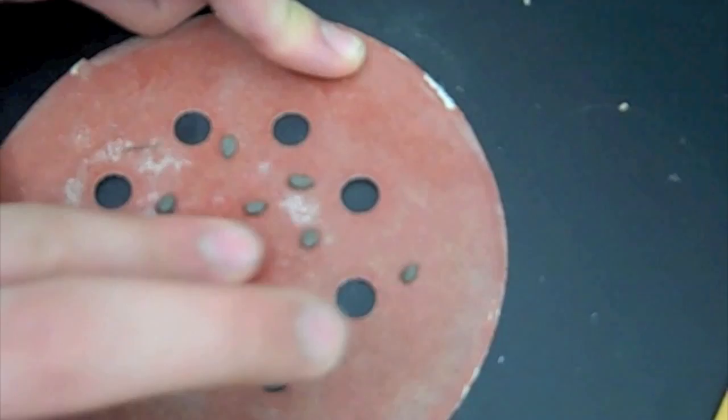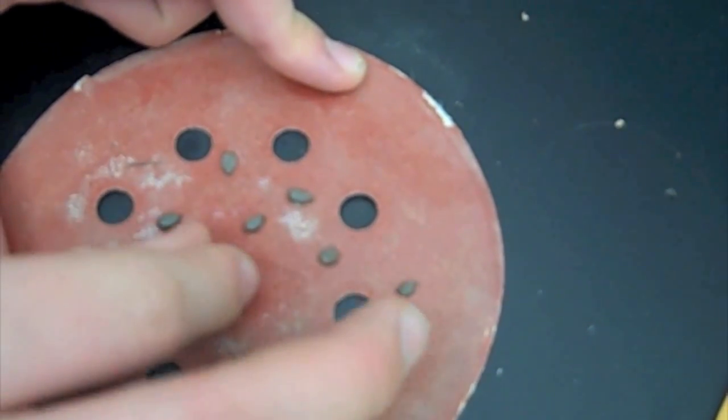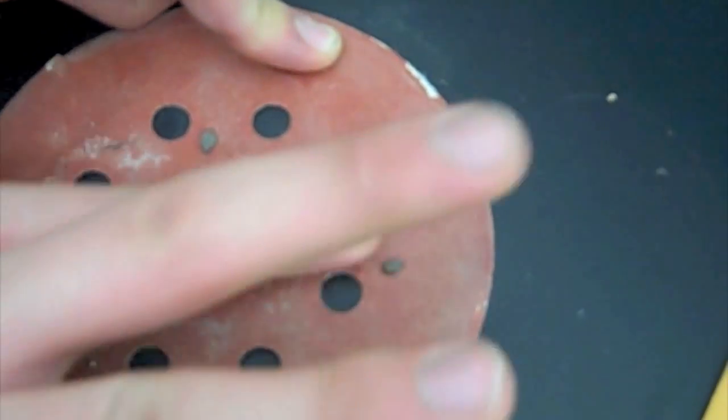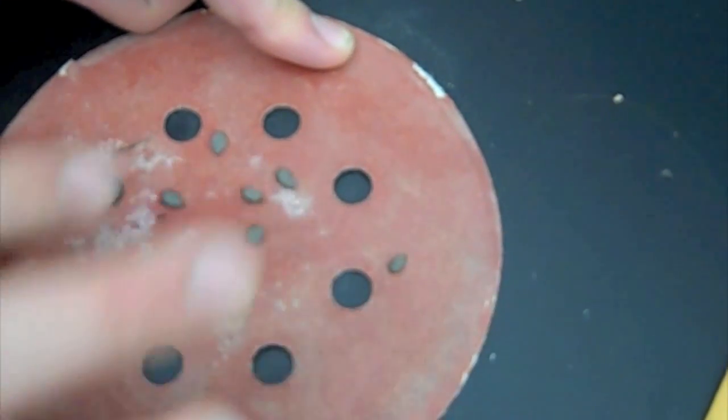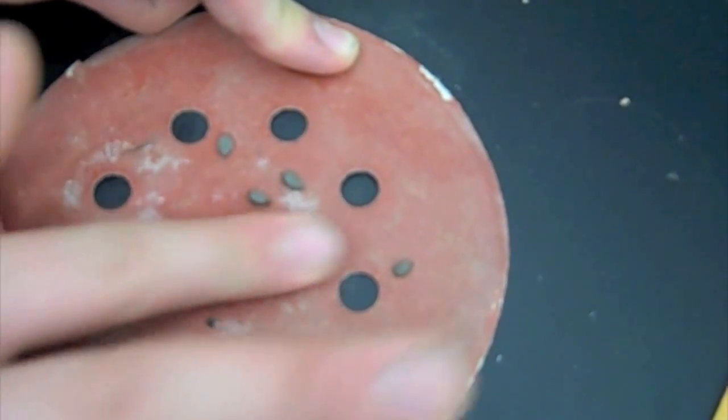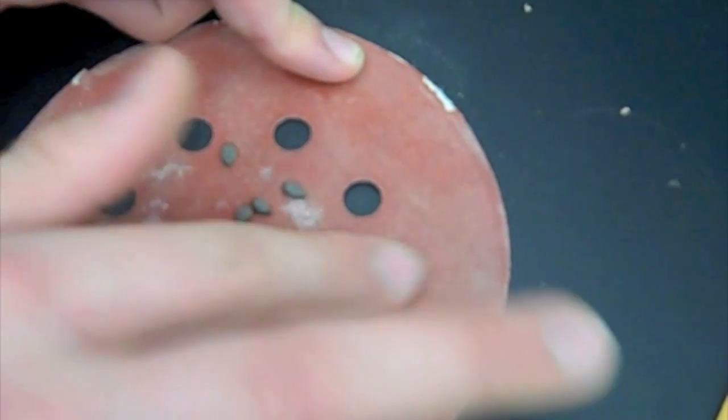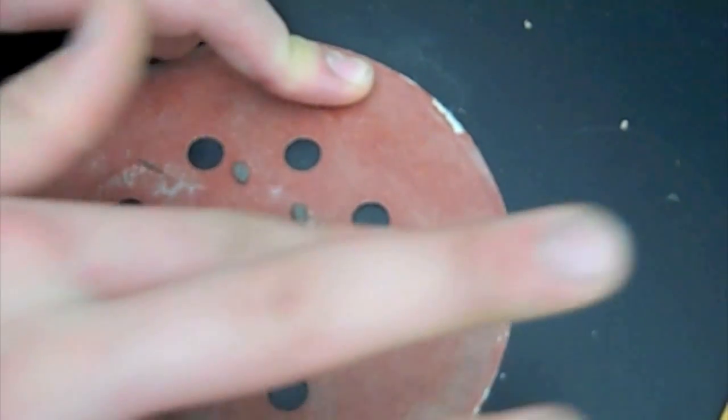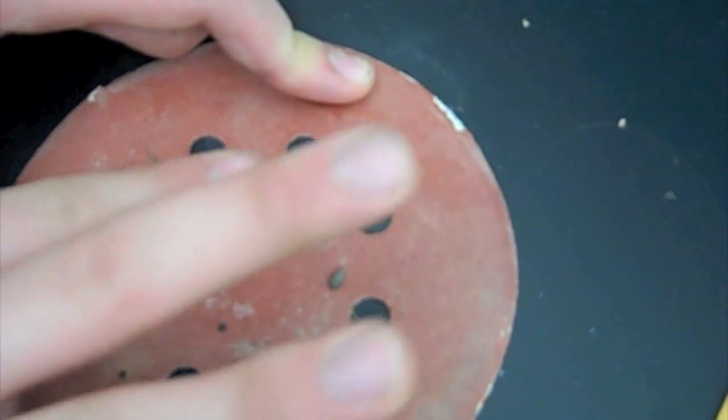This happens because the seeds have an outer coating which prevents water from coming in, and this allows them to last up to 100 years without actually growing or getting infected by any bacteria. So as long as you're scratching the outer surface, your seeds will be able to absorb water, and they'll grow into full-fledged plants.